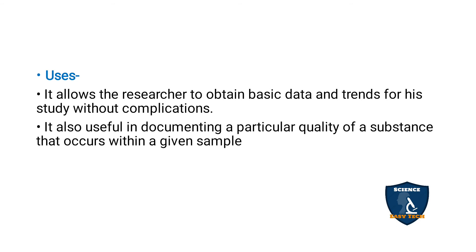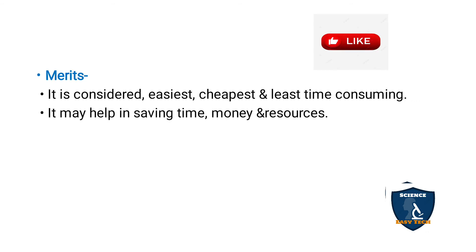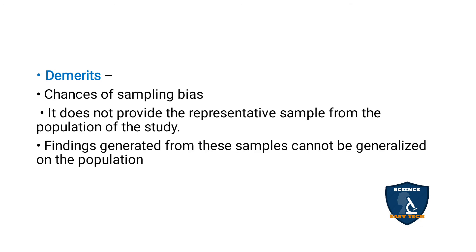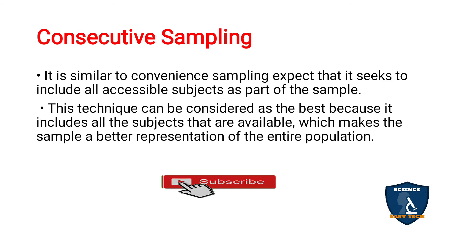Convenience sampling involves the researcher obtaining basic data and trends for the study without complications. It is also useful in documenting a particular quality or characteristic occurring within a given population. Merits: it is considered the easiest, cheapest and least time-consuming method, saving time, money and resources. Demerits: sampling bias is present, it does not represent the entire population, and findings cannot be generalized to the whole population.